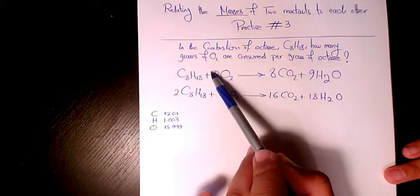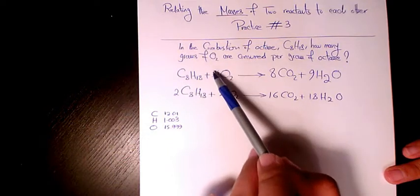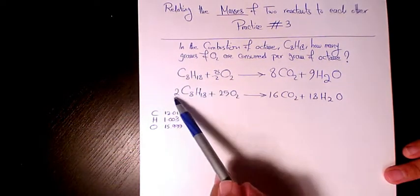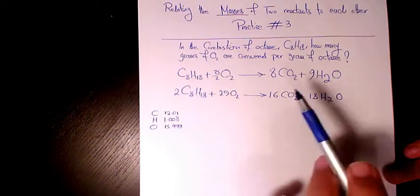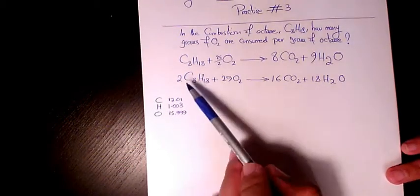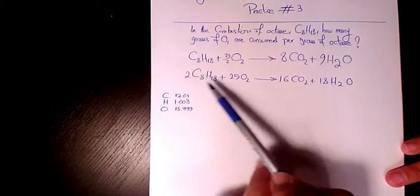We end up having 25/2, so in order to get rid of this fraction, we need to multiply everything by 2. So it's going to be 2, 25, 16, and 18. For every 2 moles of octane, we need 25 moles of oxygen.